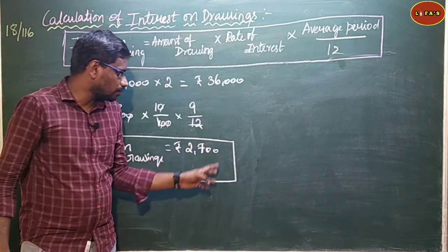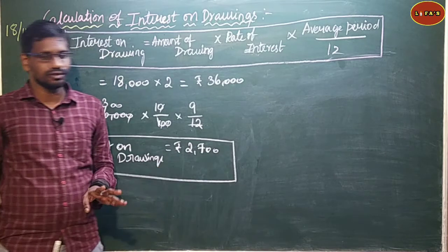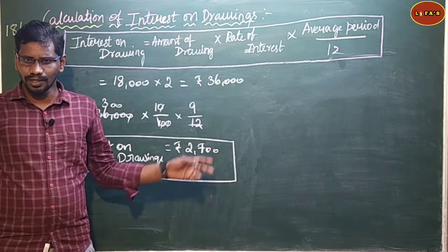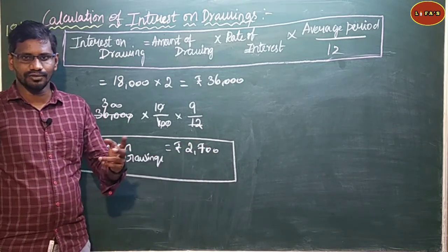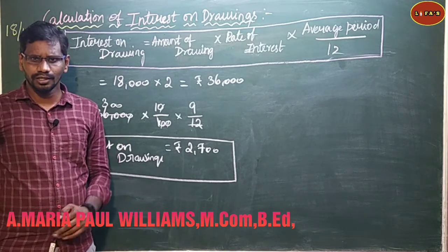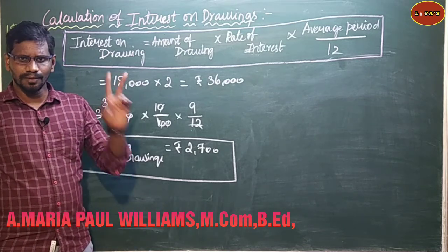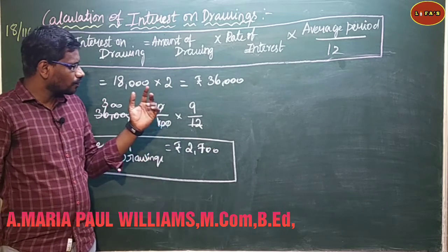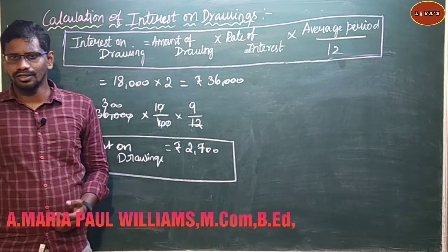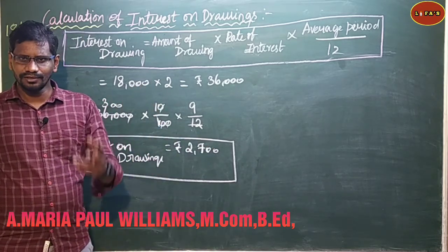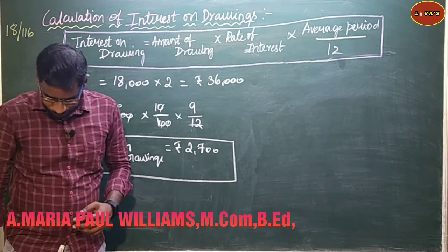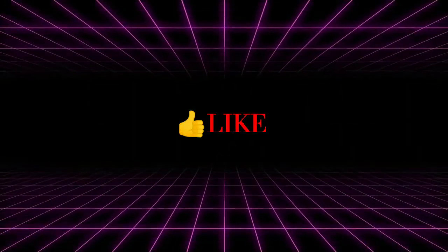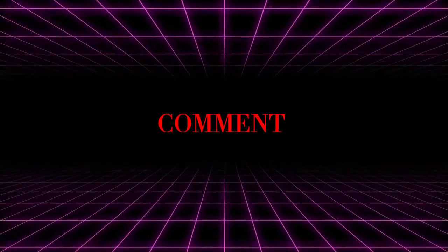Interest on drawings topic is now over. In the next video, we will cover Profit and Loss Appropriation Account, that is distribution of profits among partners. This chapter is over. Please comment below. Thanks for watching. Bye bye.